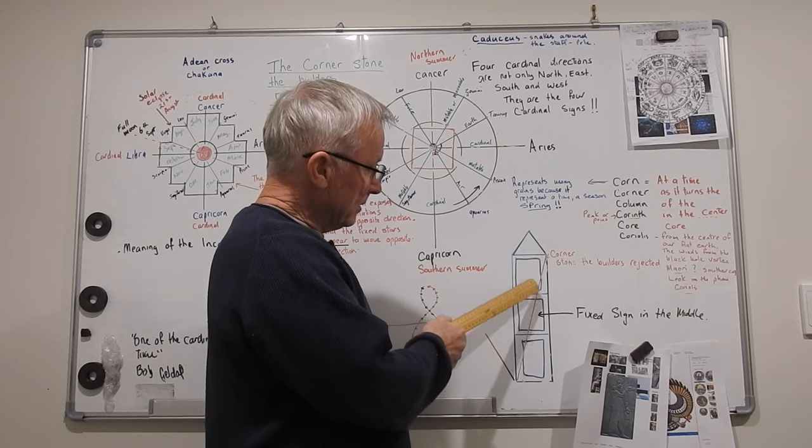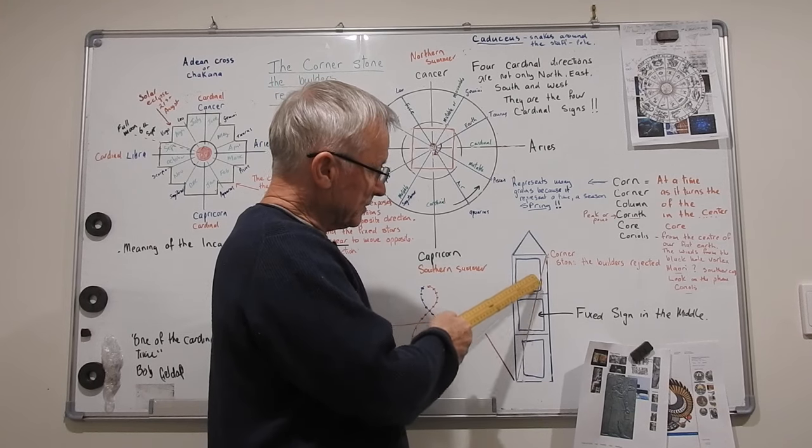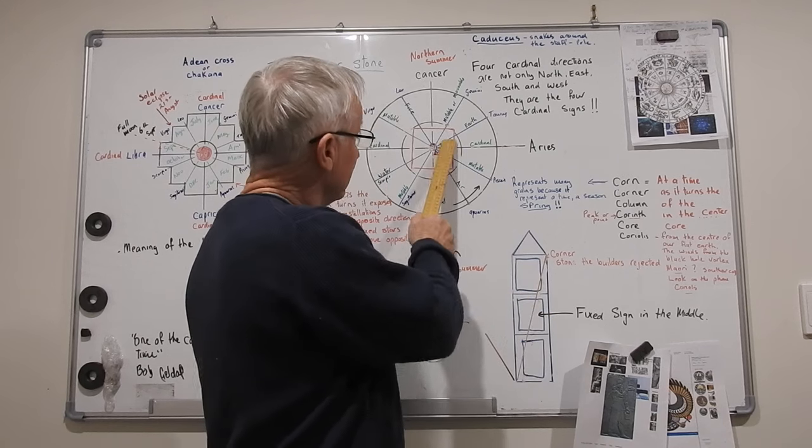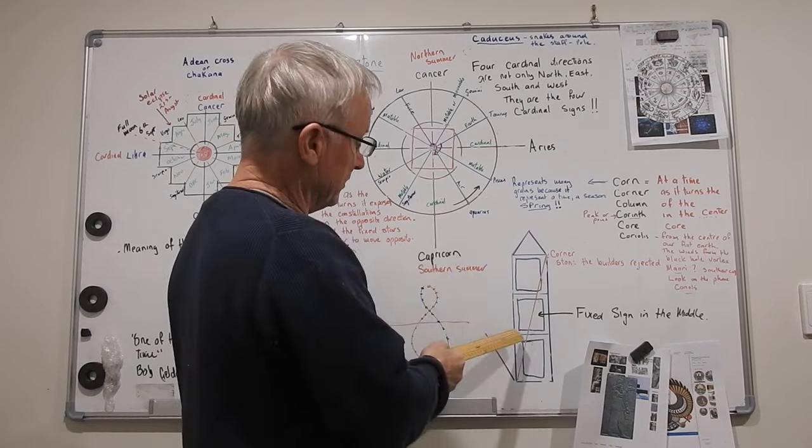So this is three monthly cycles, four sides, four sided. Three fours are twelve. These are twelve zodiac signs.